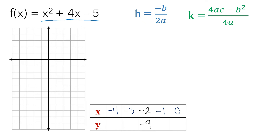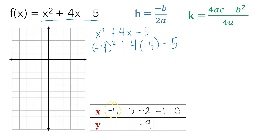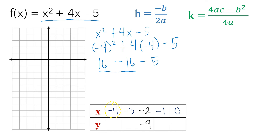Let's start with x equals negative 4. Substituting into x squared plus 4x minus 5: negative 4 squared plus 4 times negative 4 minus 5. That gives 16 plus negative 16 minus 5. The 16 and negative 16 cancel out, leaving negative 5. So y equals negative 5.